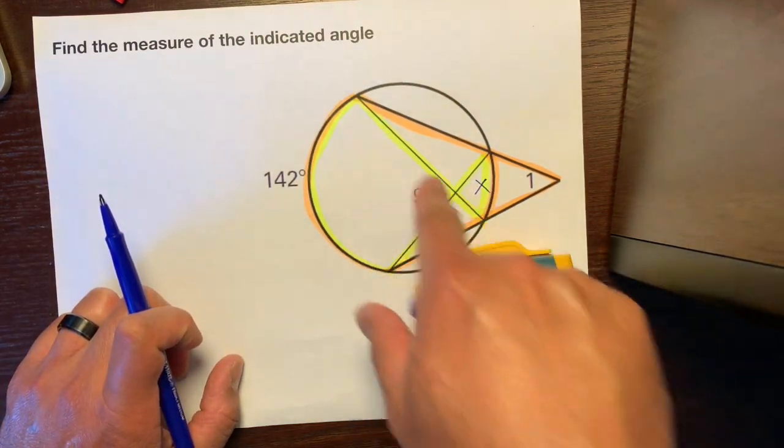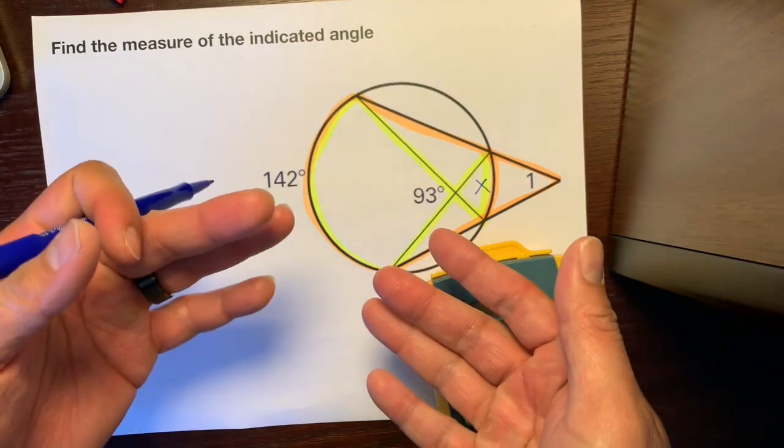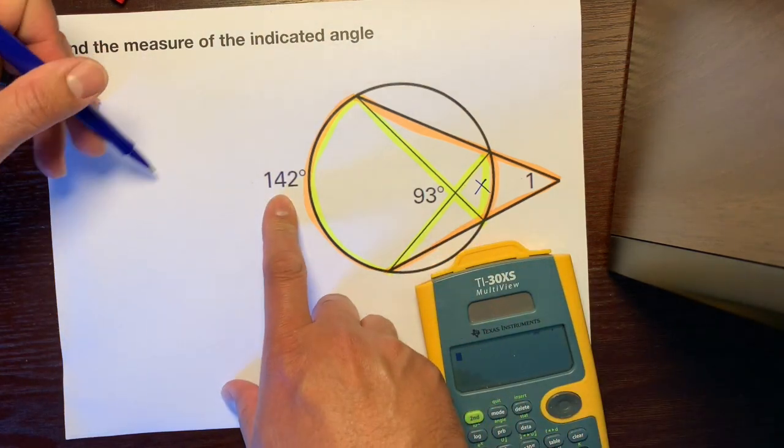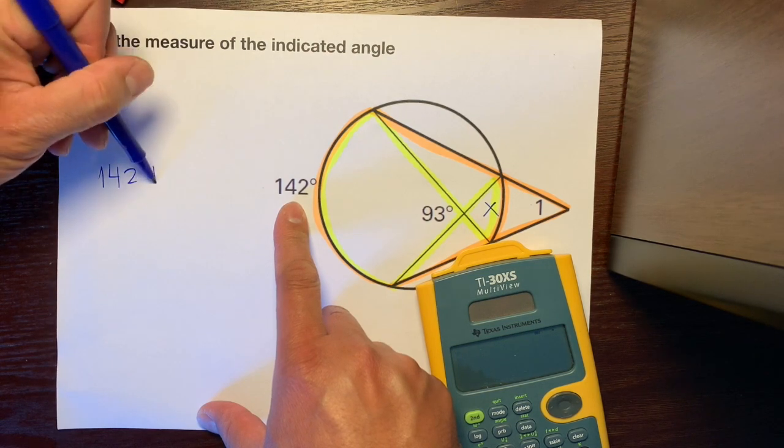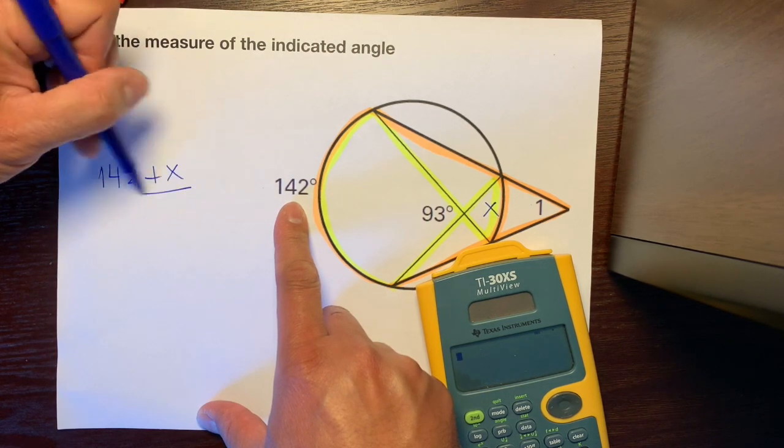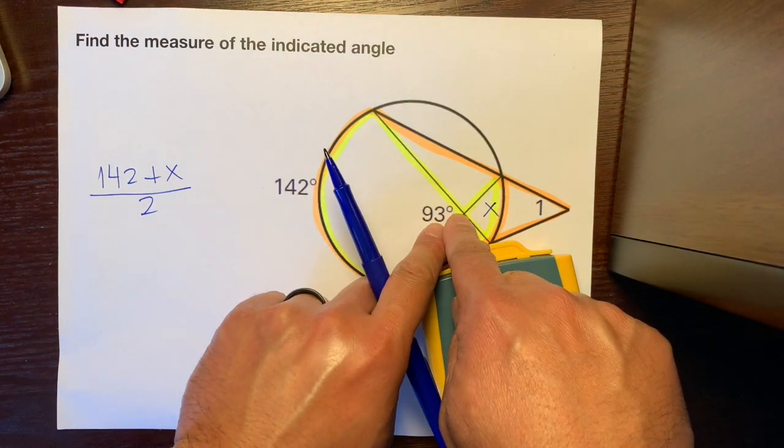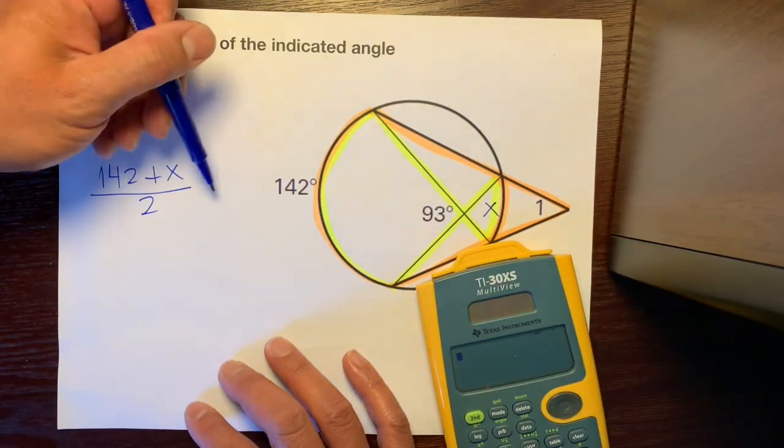These two lines intersect on the inside. If you guys remember, when lines intersect on the inside, you add and divide by 2. You find the average. So we're going to take this 142 and add it to x and divide by 2 and set it equal to the angle that's intercepting these two arcs, which is 93.